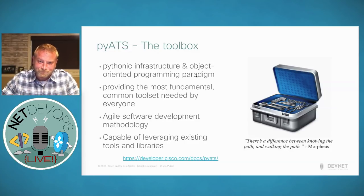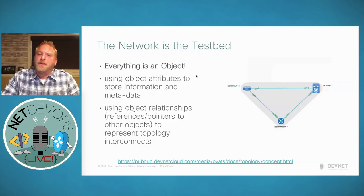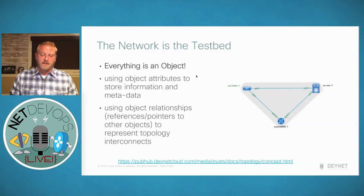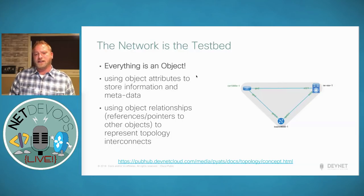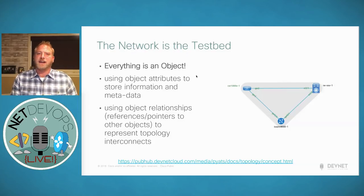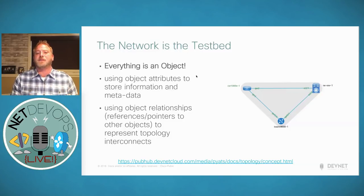At the center of what PyATS provides is this notion of a testbed. Internally these testbeds were large-scale, with hundreds or even thousands of devices not serving a production function — just there for business units to do testing and make sure new releases were stable. As we make this available to customers, that use case is still valid if you have a lab or are using something like VIRL to validate and mock up network changes. As you pivot towards using your production network, the network itself becomes the testbed.